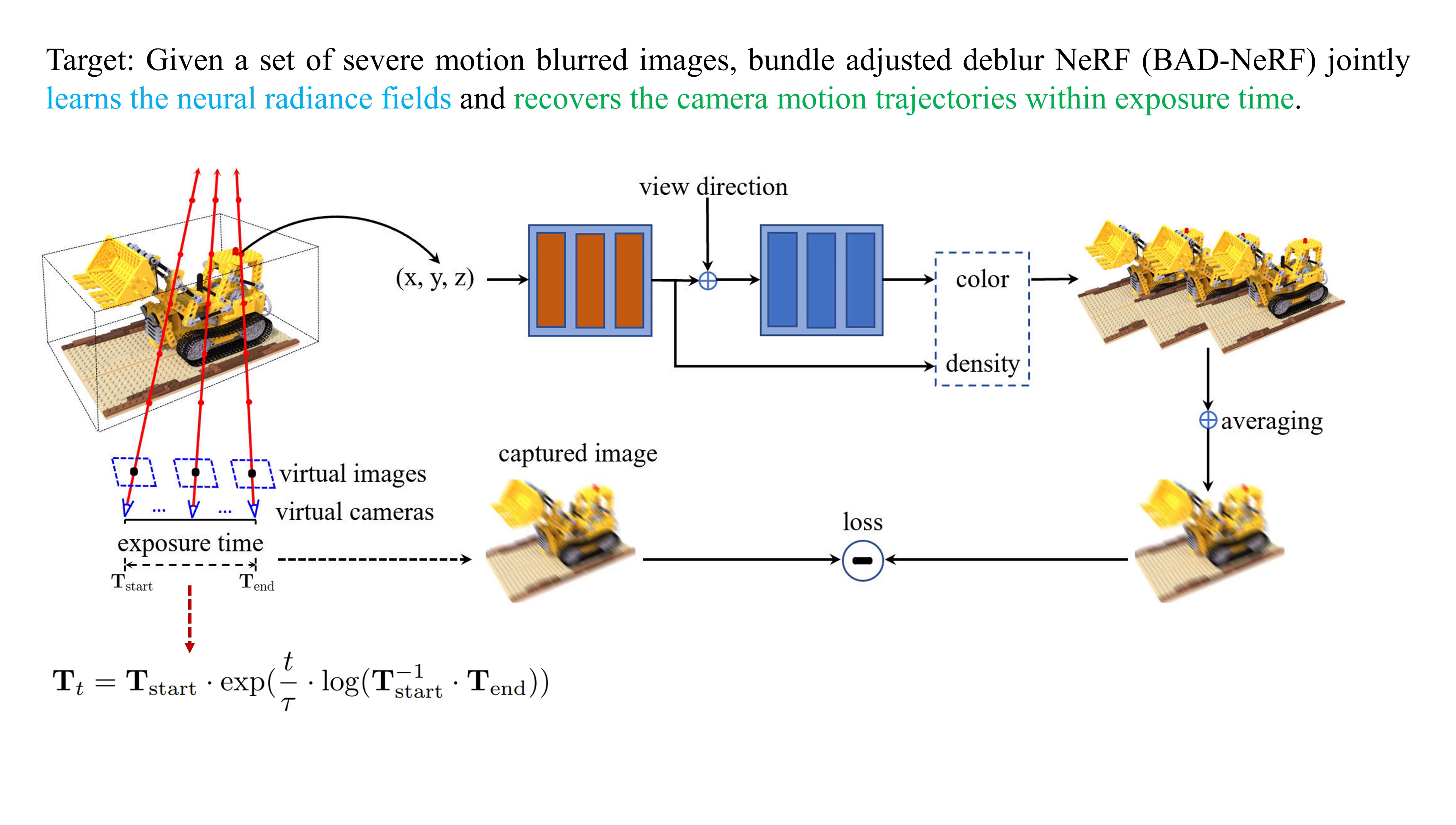This is the pipeline of our BAD-NeRF. We build the motion blur model in NeRF by parametering two camera poses, start and end poses of a camera trajectory within the exposure time. Then we represent the camera motion trajectory by a linear model or cubic B-spline model in the SE3 space. For more details, please see our supplementary material.